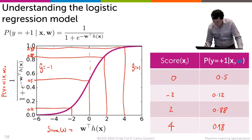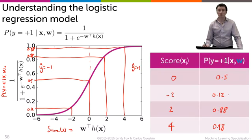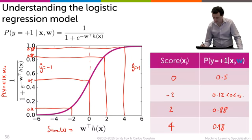In other words, for the points where the score is less than 0, you see that the probability is less than 0.5 of being y equals plus 1, which implies that we output a y hat of minus 1.